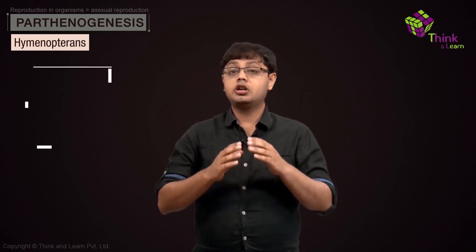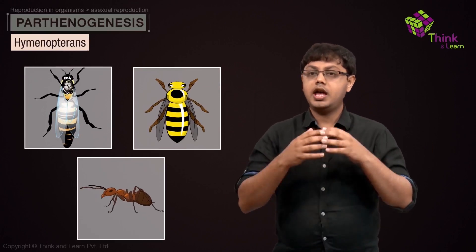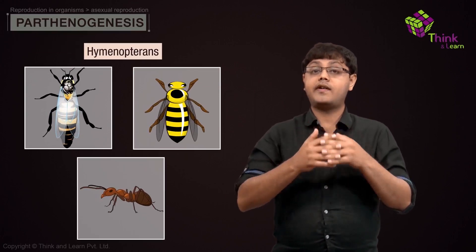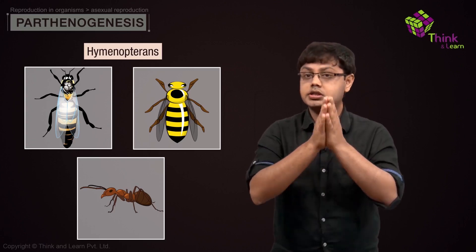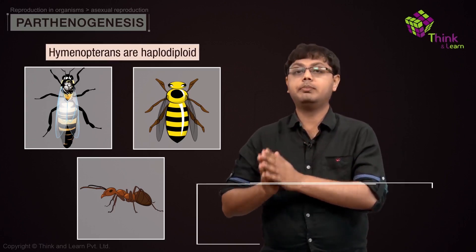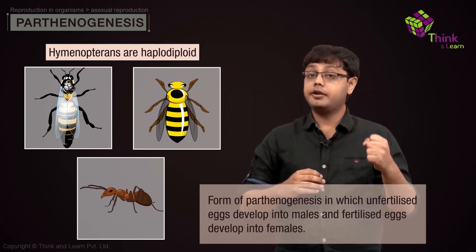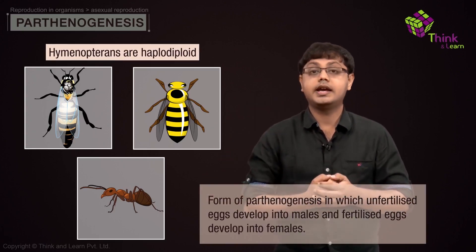The male drone bees just hang around the hive when they are not performing their sole task, which is to mate with the queen bee. The best example of parthenogenesis is in hymenopterans — the taxonomic order to which honeybees, wasps, and ants belong. Any ant, bee, or wasp male got there by parthenogenesis. Hence, hymenopterans are haplodiploid: males come from unfertilized eggs and females from fertilized eggs.